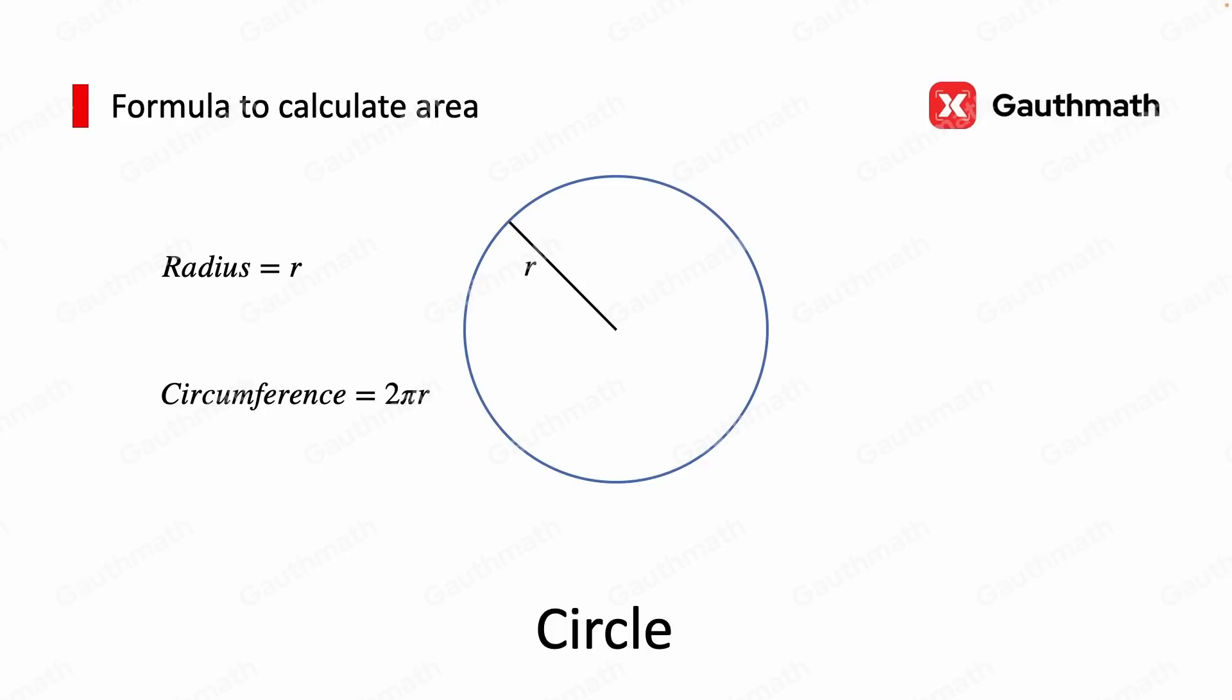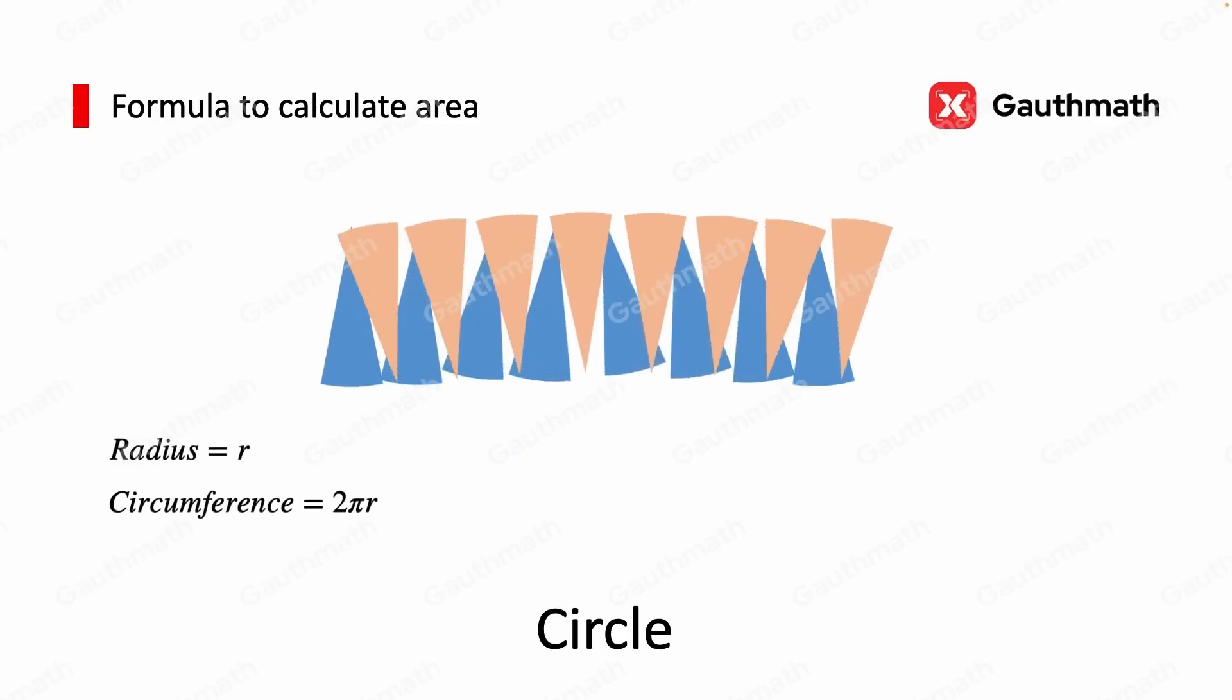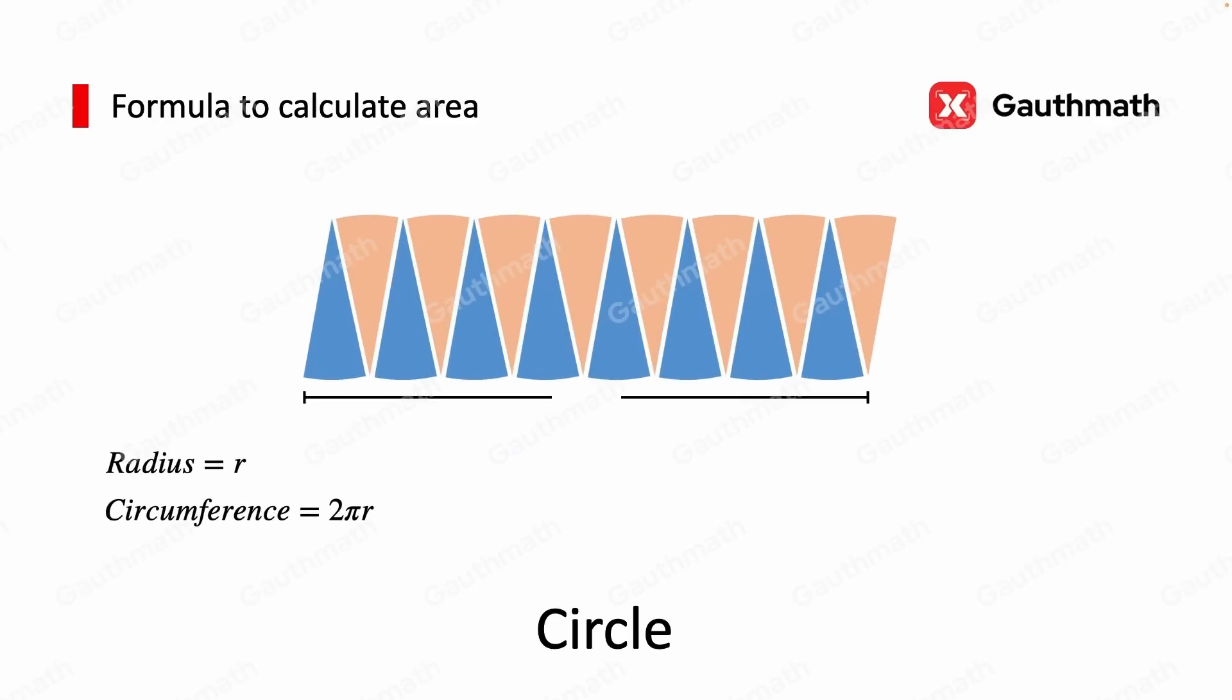We first cut it into several sectors that are infinitely small. And we arrange the sectors into a parallelogram. We can see that the base of the new parallelogram is half of the circumference of the original circle, which is πr. And the height of the parallelogram is the radius of the circle. Therefore, we use the height multiplied by the base. We use πr times R, which equals πr².